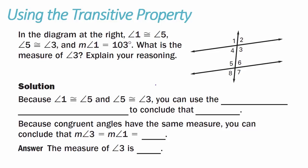Example 1: using the transitive property. In the diagram, angle 1 is congruent to angle 5. The way we show angle congruence is by the number of arcs. So angle 1 and angle 5 are congruent, and angle 5 is congruent to angle 3. The measure of angle 1 is 103 degrees. What is the measure of angle 3?